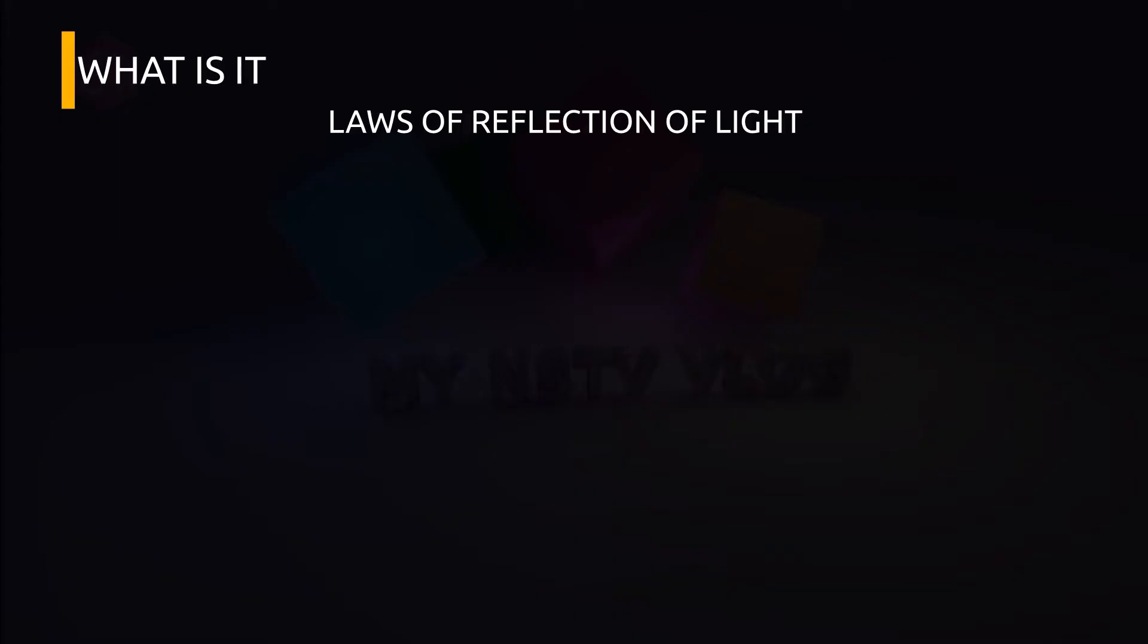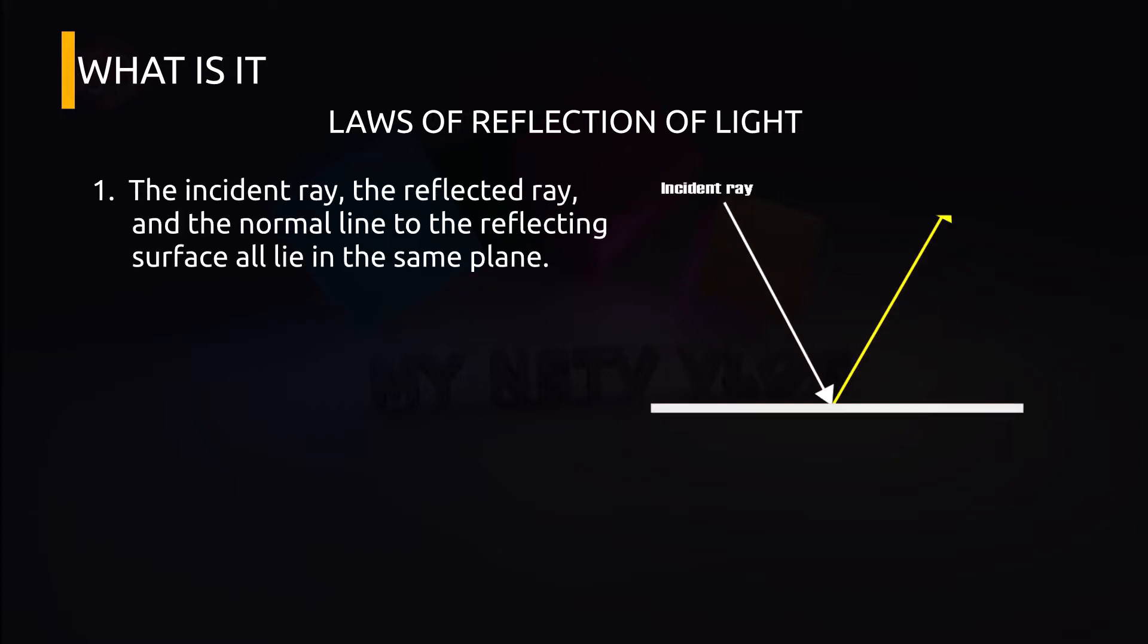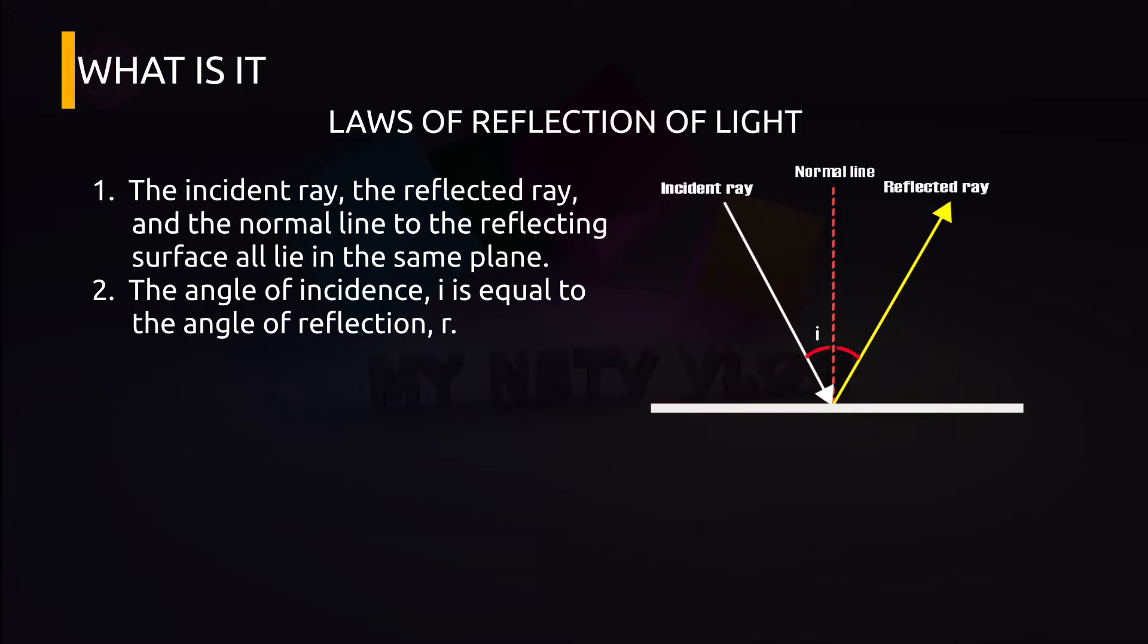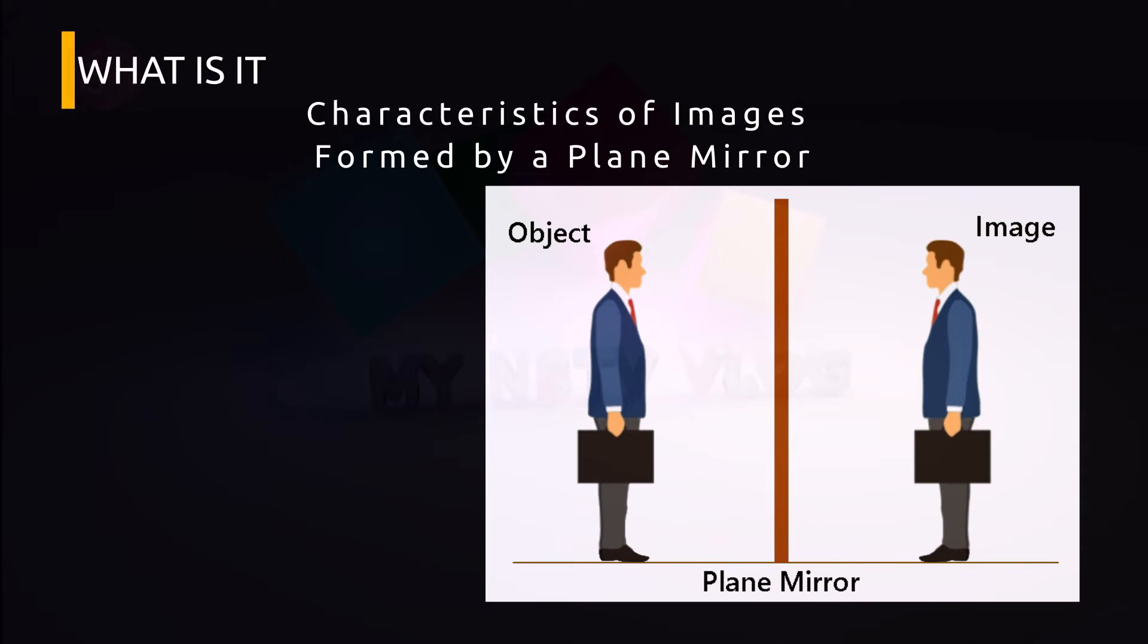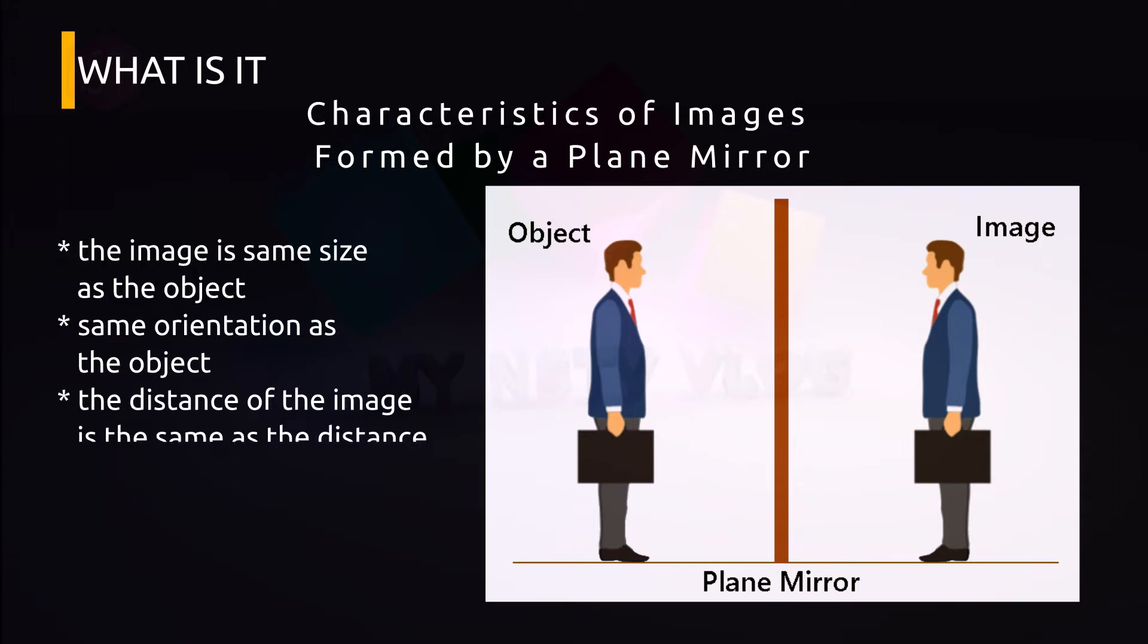The laws of reflection state that, number 1, the incident ray, the reflected ray, and the normal line to the reflective surface all lie in the same plane. And number 2, the angle of incidence is equal to the angle of reflection. Please refer to figure number 2. Regular reflection happens also in a plane mirror. When you're in front of a mirror, what can you see? The image is the same size as the object, which is yourself. Same orientation as the object. Your head is on top when your feet is on the ground. It will never be inverted. The distance of the image is the same distance from the mirror, and it is always virtual. Please refer to figure 3.